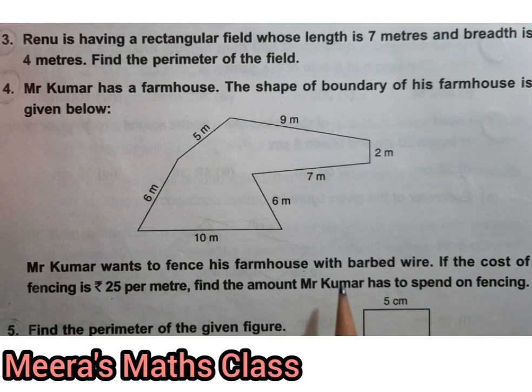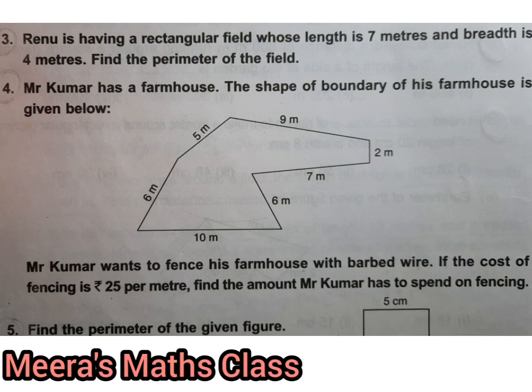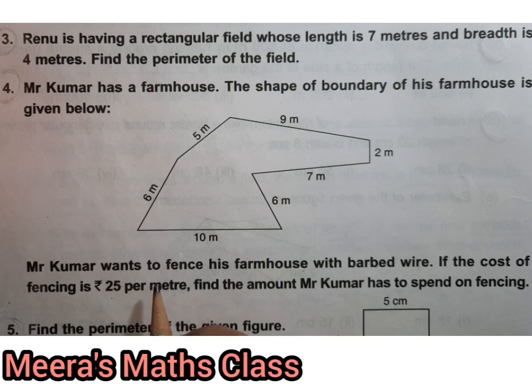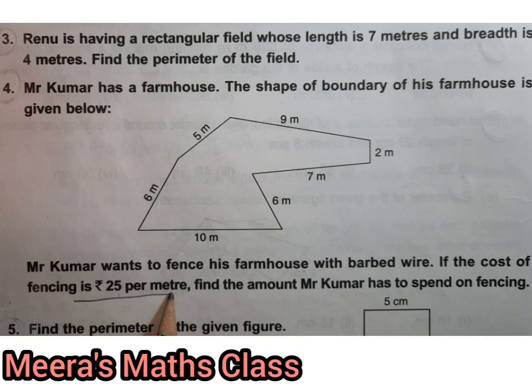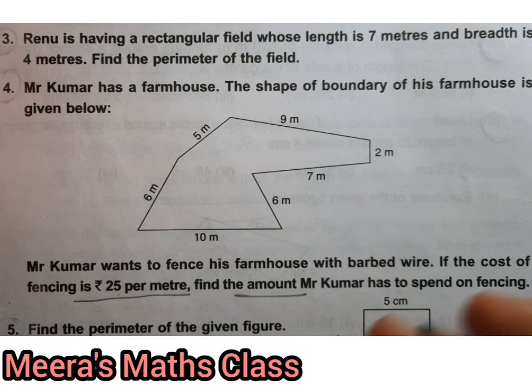Okay, now Mr. Kumar wants to fence his farmhouse. Fencing means putting the border, boundary wall, you can say boundary wall, okay, with barbed wire. What is barbed wire? The wire having like, you know, thorn-like, so that the thief or animals don't get inside. If the cost of fencing is rupees 25 per meter, find the amount Mr. Kumar has to spend on fencing.